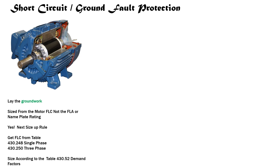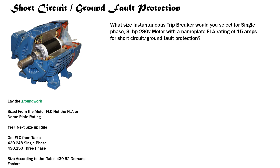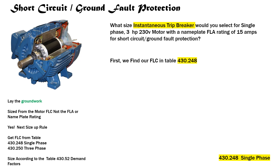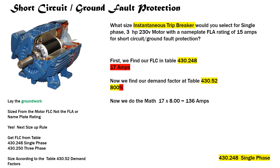I threw this one in for a little bit of fun — hang with me on this one. What size instantaneous trip breaker would you select for a single-phase, three horsepower, 230 volt motor with a nameplate FLA rating of 15 amps for short circuit ground fault protection? It's single-phase, three horsepower, 230 volt, and an instantaneous trip breaker. We find our FLC in table 430.248 — it's 17 amps. We head to table 430.52, and this is where it gets fun: the demand factor is 800 percent.